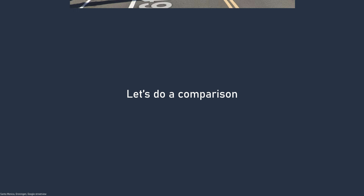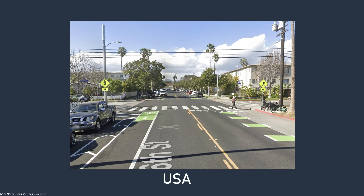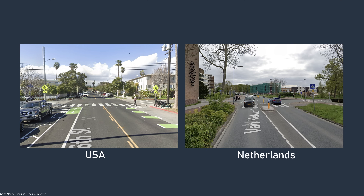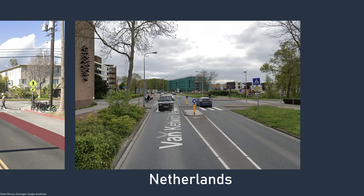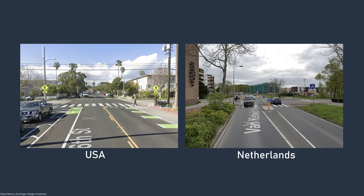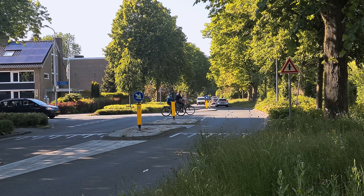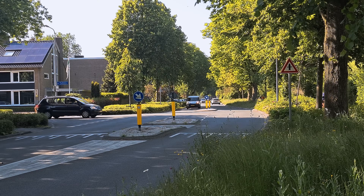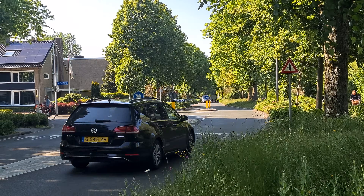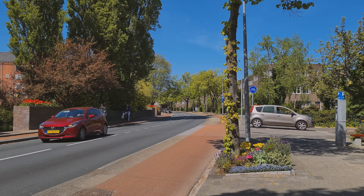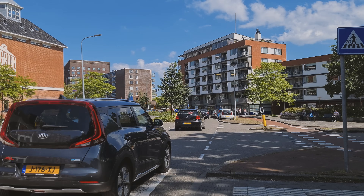Now let's do a comparison. Take a look at this typical small American intersection that has been improved recently with a bike lane and a pedestrian crossing, and this is a small, typical Dutch intersection. Notice the difference? Both streets have a bike lane; however, in the American one, cyclists are squeezed in between the roadway and parking, while in the Netherlands they are physically protected. Most importantly, the Dutch intersection includes traffic islands, which play a crucial role in enhancing pedestrian safety. They allow pedestrians and cyclists to cross the street in two stages, while also making drivers slow down. Dutch streets generally have fewer lanes, making crossing for pedestrians much safer.